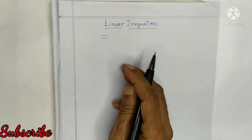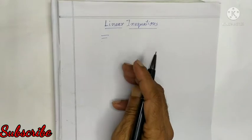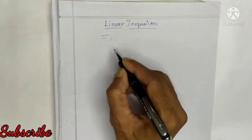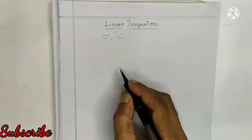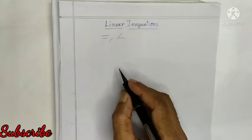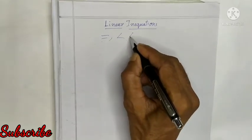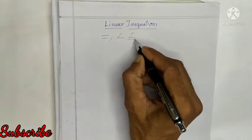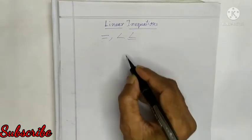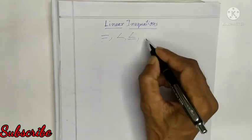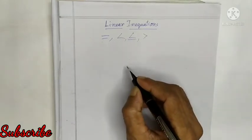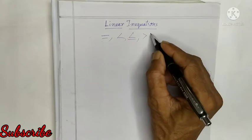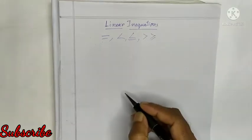This is the equality sign. This is the less than sign. This is the less than or equal to sign. This is the greater than sign. This is the greater than or equal to sign.